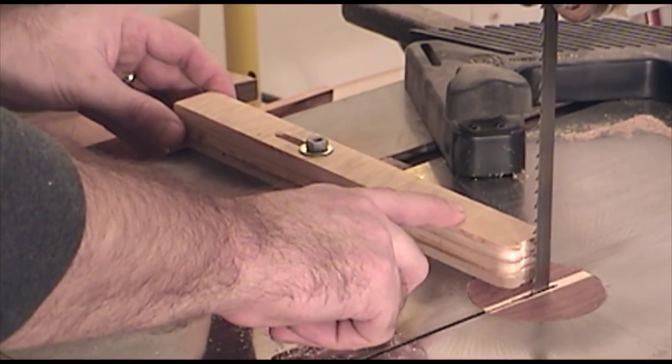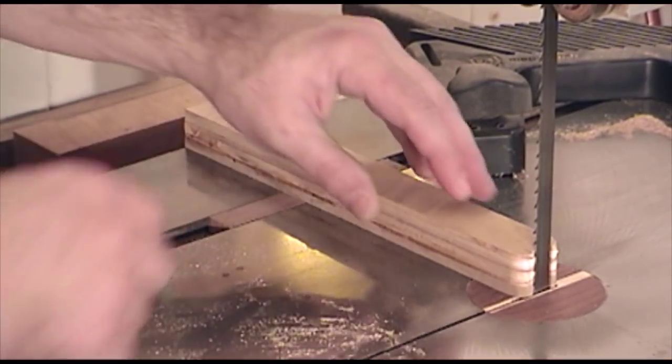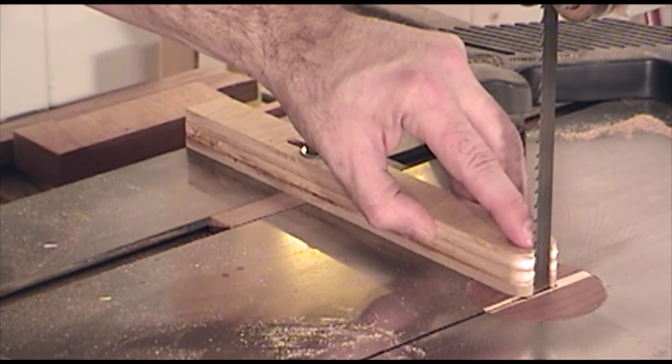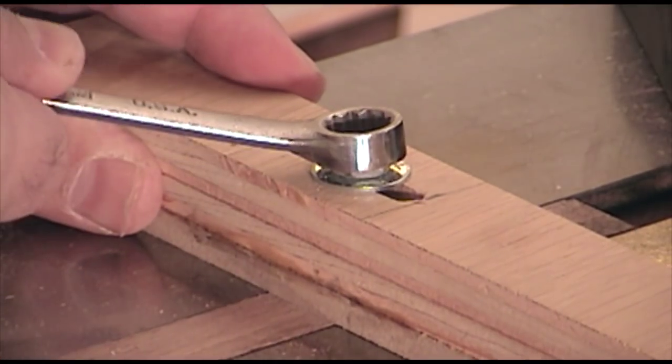So with the jig and the miter track, all I need to do is slide the jig into the bandsaw blade so that it barely makes contact with the side of the bandsaw blade, and then tighten down this bolt.